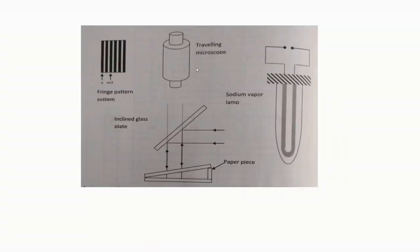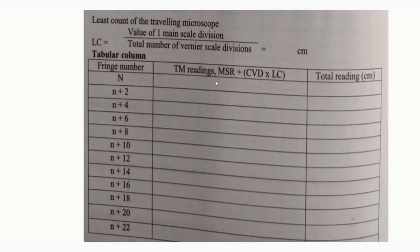After getting the fringe pattern through the microscope, we have to concentrate on one of the dark fringes, which we take as the nth fringe. We have to take the readings through the travelling microscope for the nth fringe — that is the MSR reading and CVD reading. The least count (LC) of the travelling microscope is given by the formula: value of 1 main scale division divided by total number of divisions in the vernier scale. Here, 1 main scale division = 0.05 cm and total vernier divisions = 50, so LC = 0.05/50 = 0.001 cm. Cross-verify this by doing the experiment.